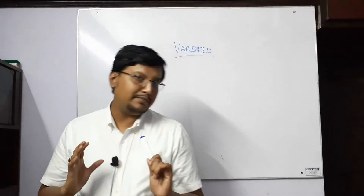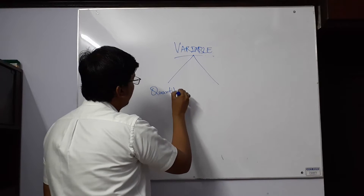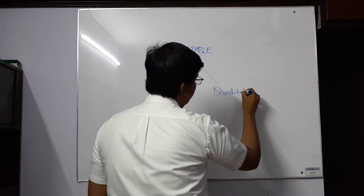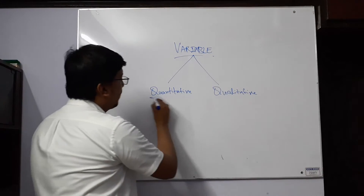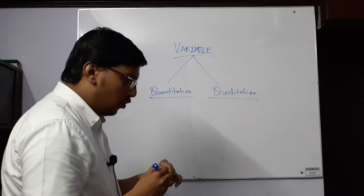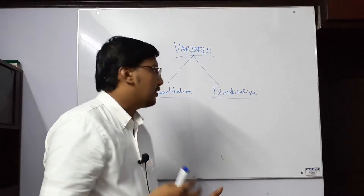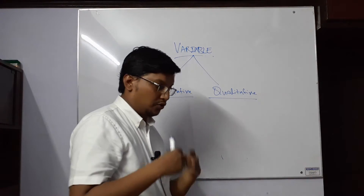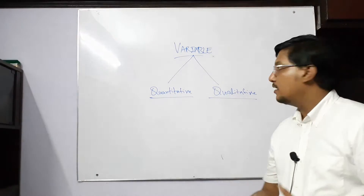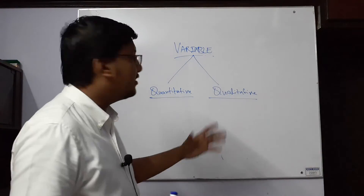How many types of variables can be described here? There are two types. Basically, the two types are: first is quantitative, and second is qualitative. These are very self-explanatory terms. Quantitative — those variables can be quantified — the numerical responses are called the quantitative variables. And those variables which can be described in terms of quality are called the qualitative variables. We will take some examples so we can easily understand.